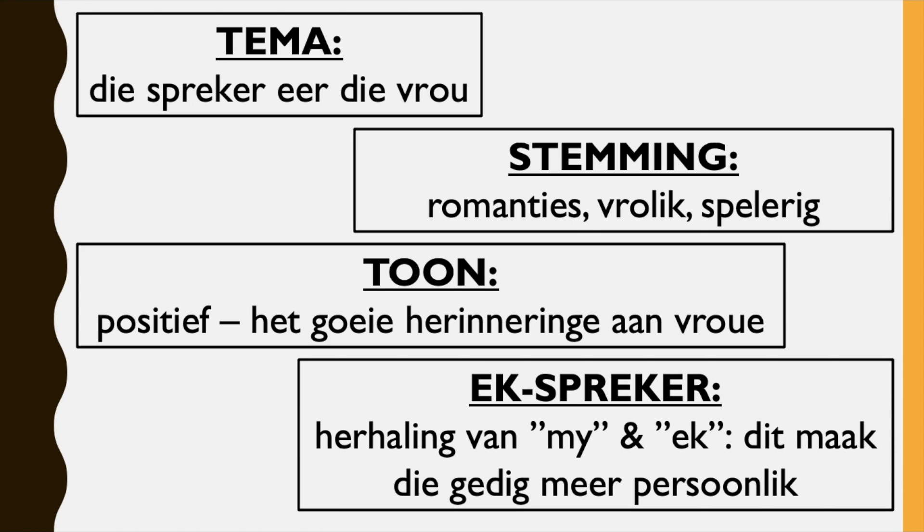And then ek spreker — a first-person speaker. Herhaling van my ek, dit maak die gedicht meer persoonlik. So there's repetition of 'my ek' and that makes the poem more personal because it's from the speaker's direct perspective.